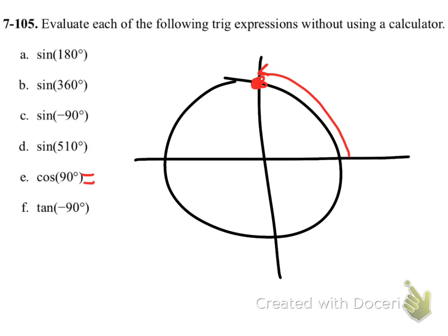So the cosine value there is going to be zero. So this one, if it was a sine problem, it would ask for the height, but not this one. This is a cosine value. So I want the horizontal distance, but it is zero because it's right on that y-axis.